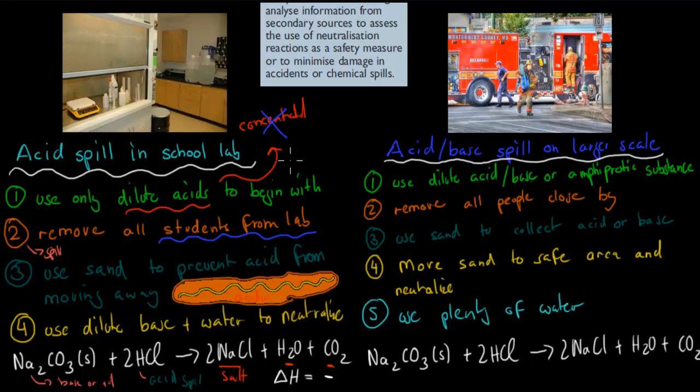What you would use: you would either use a dilute acid if there was a base spilled, you would use a dilute base if there was acid spilled. Or if you want to keep it simple, just use an amphoteric substance, such as the one we had before, because that can deal with both acids or bases. No matter what was spilled, we can use that substance.